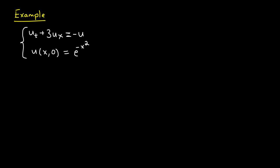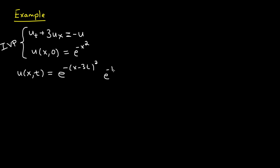It always helps to plug in some numbers for a better understanding. So I took the transport equation with decay and plugged in c equals 3, a equals 1, and initial condition f(x) equals e to the minus x squared. This is called an initial value problem. By the calculations from the last slide, we get the solution: e to the minus (x minus 3t) squared, times e to the minus t. The first factor is our f(x minus ct), and the second is our e to the minus at.